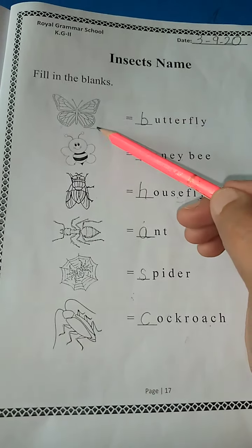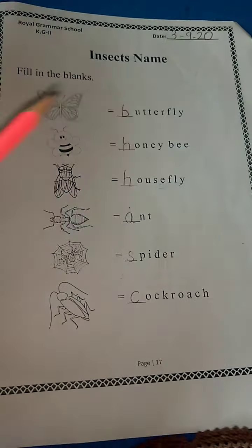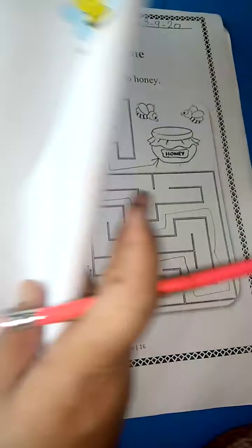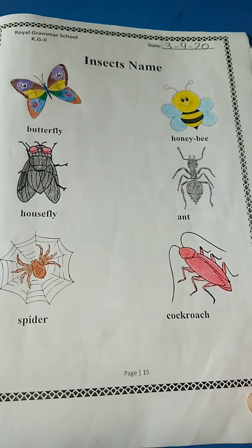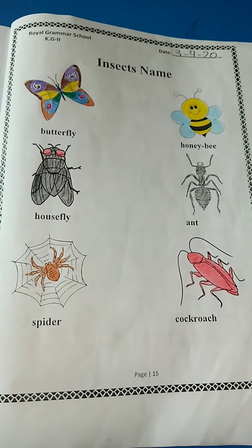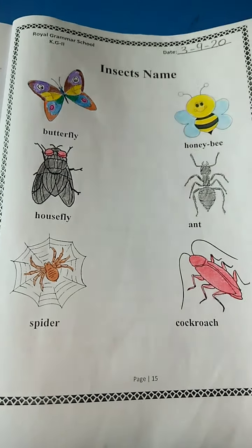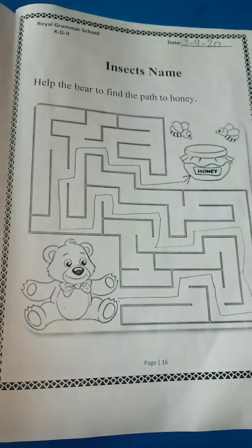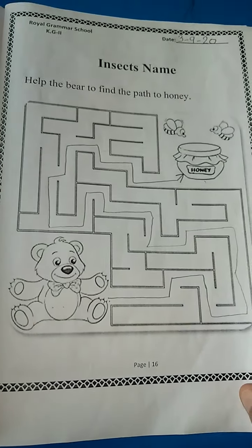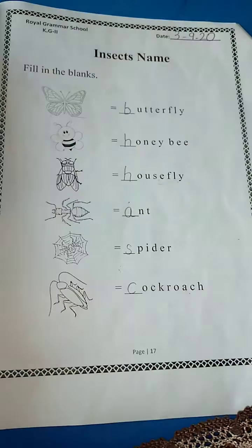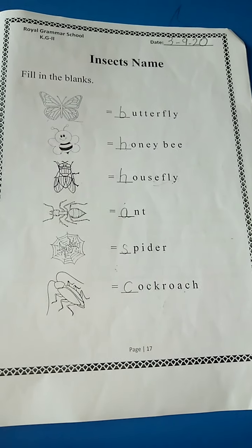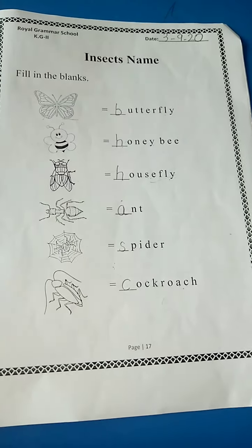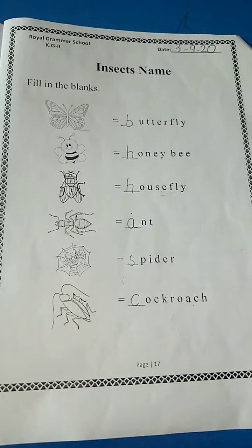And this is your coloring — color it the same as I have done on page number 15. So, what did we do today? Page number 15 is done. Page number 16 is done. Page number 17 is done. I hope you have understood it correctly.